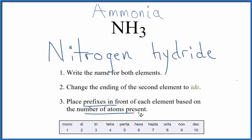We use this chart here for the prefixes. Nitrogen - we just have one nitrogen atom, but for the first element we don't write mono when we only have one, so this will just stay nitrogen.